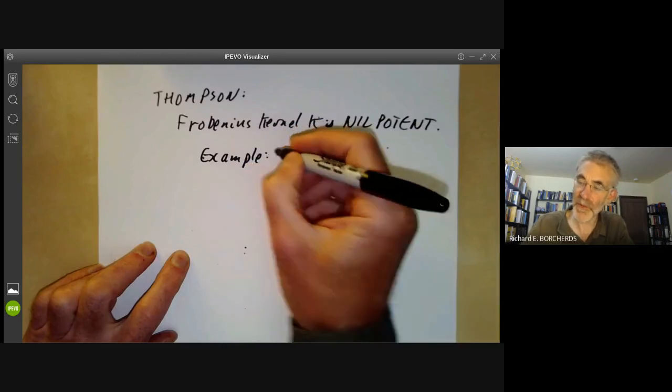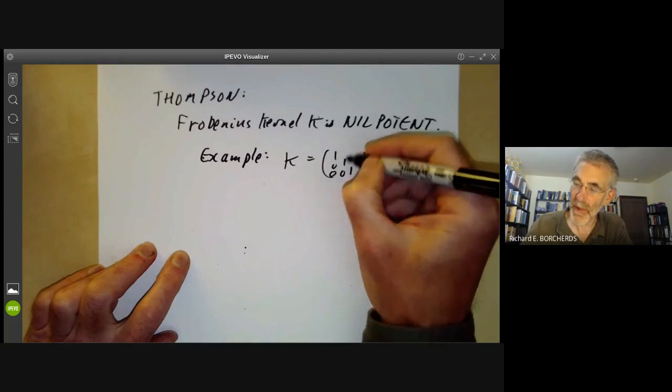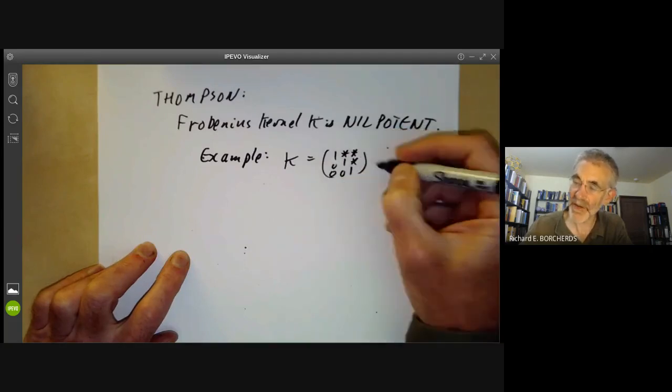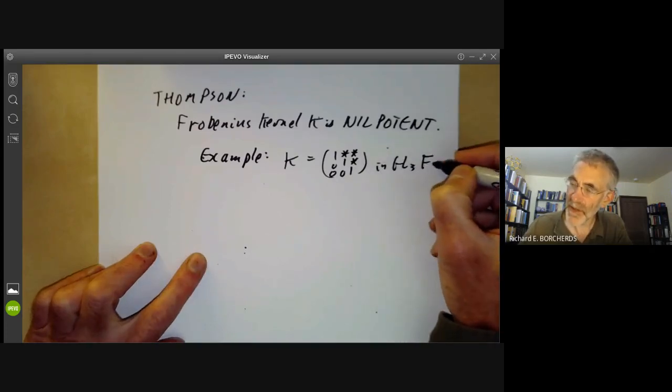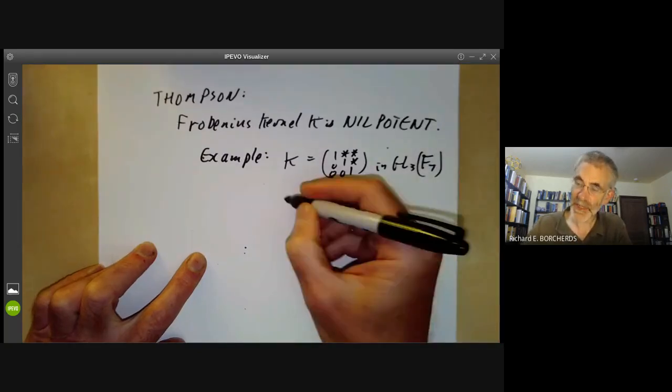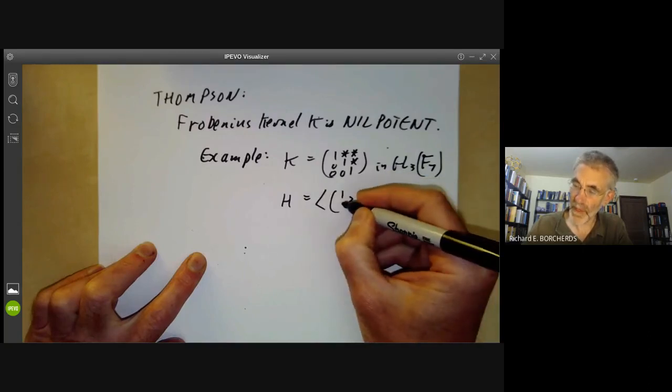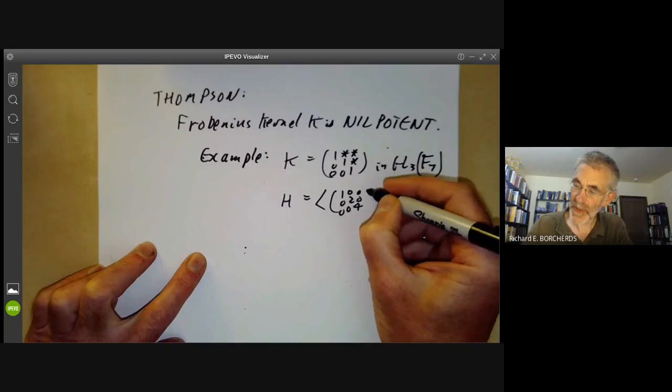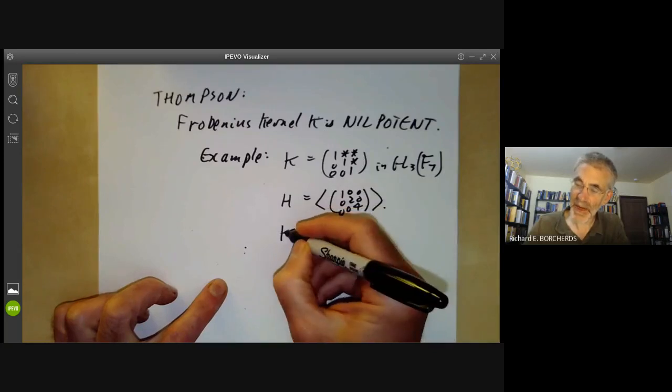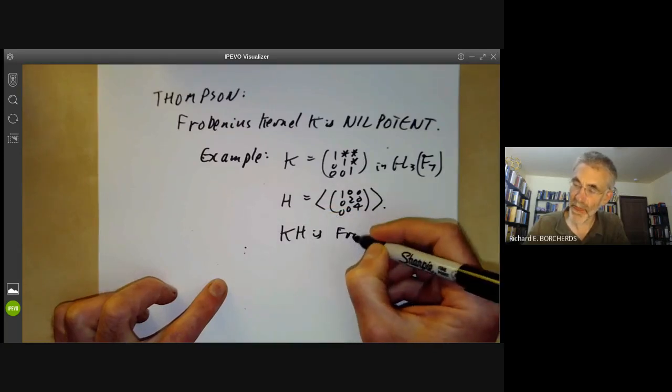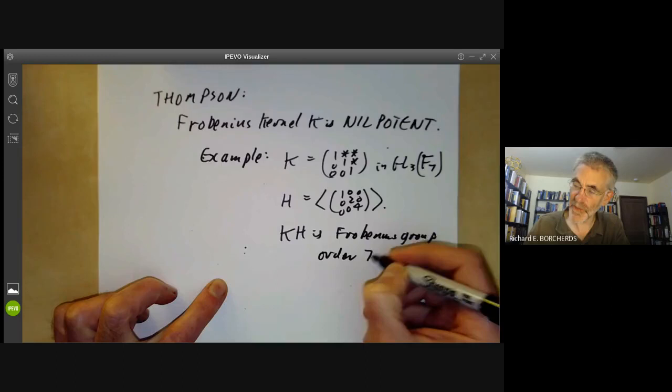One example is the following group here. You take the kernel K to be all matrices of the form 1, 0, 0, star, 1, 0, star, star, 1 in GL3 of the field with seven elements. And we take H to be the group generated by 1, 2, 4. So these diagonal elements. Then the group KH is a Frobenius group of order 7 cubed times 3.